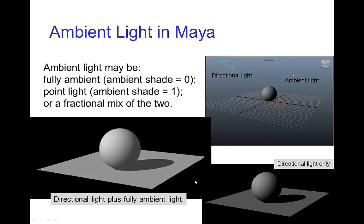You see example here of a rendered image using a directional light plus a fully ambient light, and of course the ambient light illuminates into the cast shadow. You can compare that with having just the directional light.